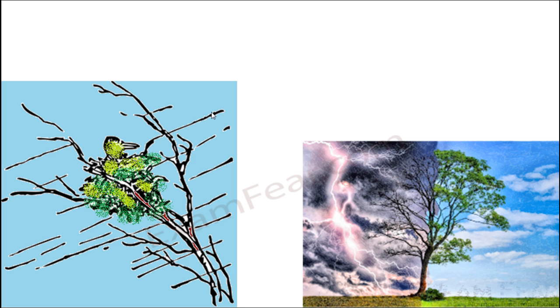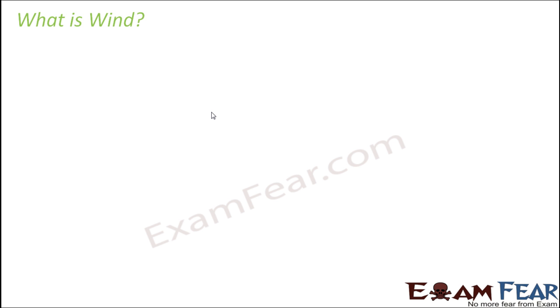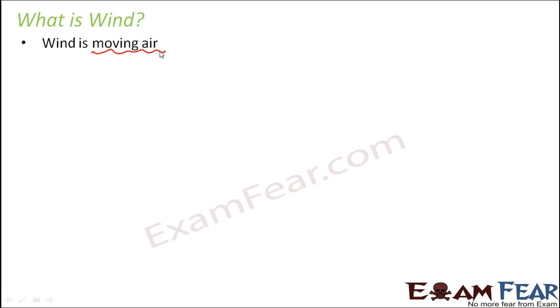So let us now learn what causes these natural phenomena like wind, storms, and cyclones. Based on the examples listed, I hope you are able to understand what wind is — it is nothing but moving air. That is the simple definition of wind. Sometimes people are not able to distinguish between wind and air. Air is a static mixture of gases, but when that same air is moving from one place to another, we call it wind.